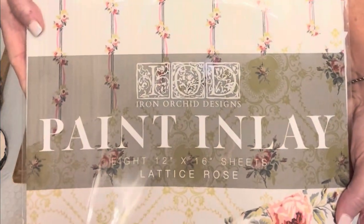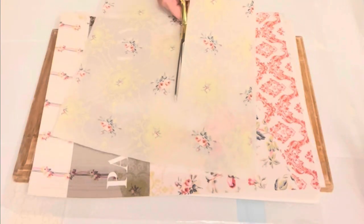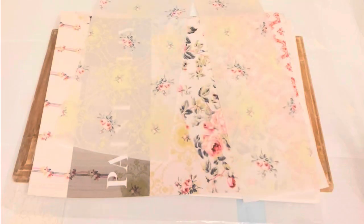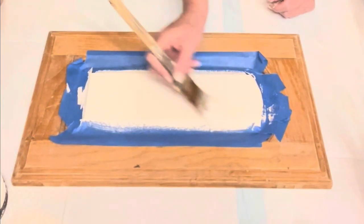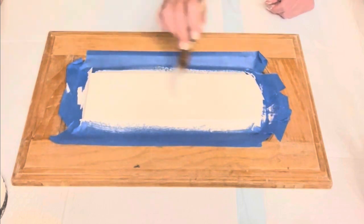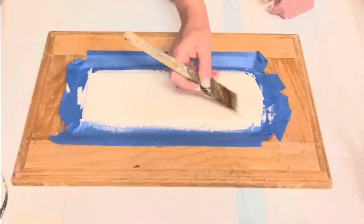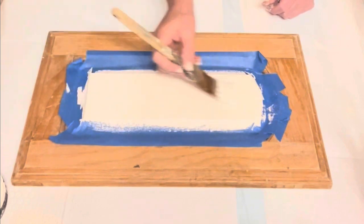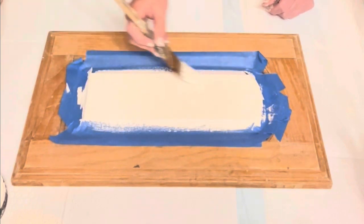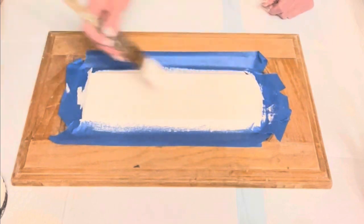Then I got this IOD paint inlay from Decoupage Central. I'll cut off the portion that I wanted. This one's called Lattice Rose. Then you want to apply another good layer of your paint. I'm using that Cottage White once again. You want to make sure that the paint completely covers your surface and you do want a good wet layer of paint.